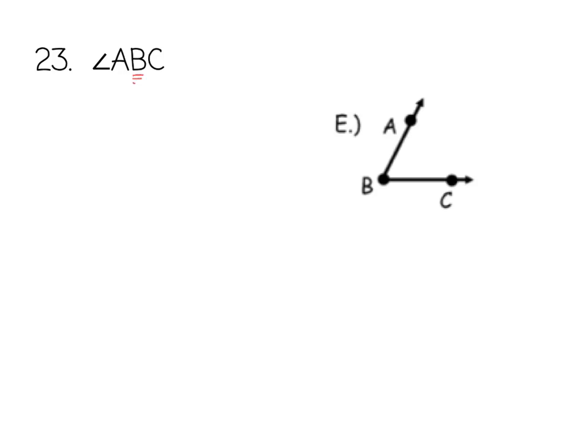Angle ABC, again the vertex has to be B. Again, A and C are just points on the ray.